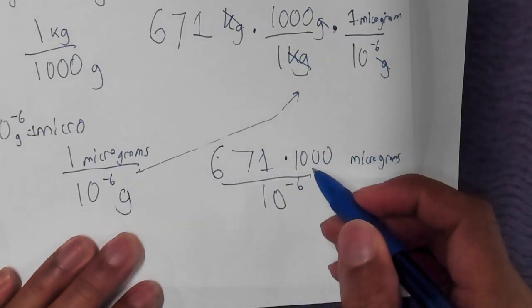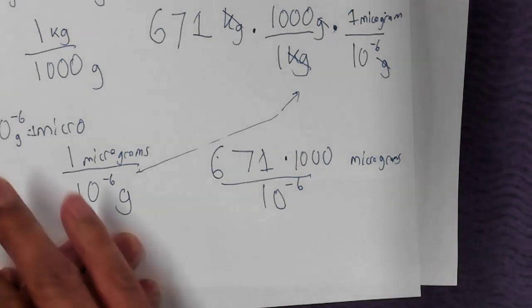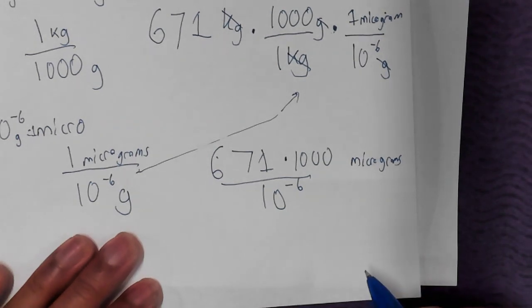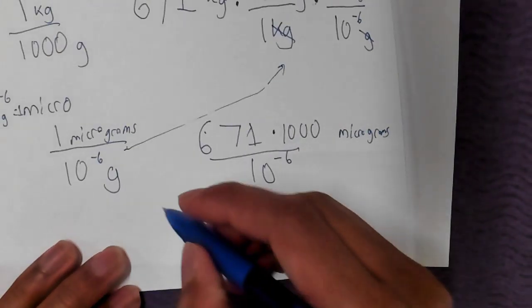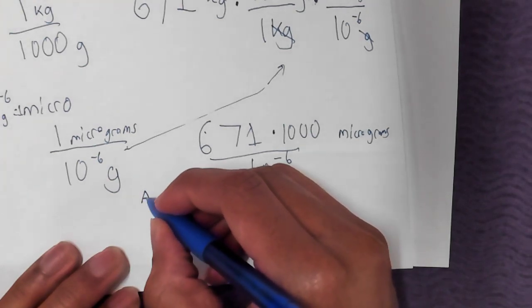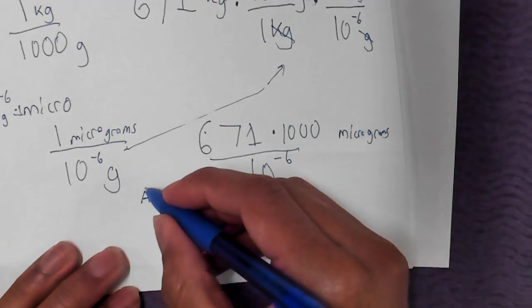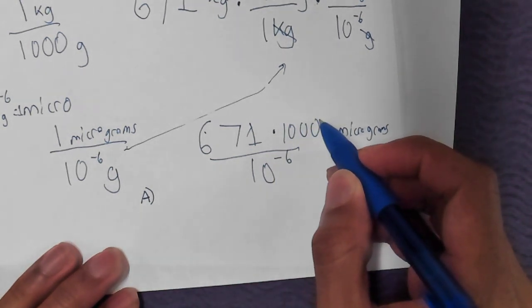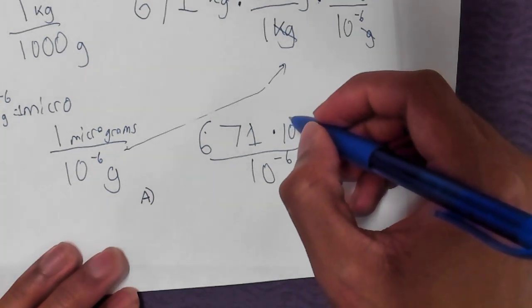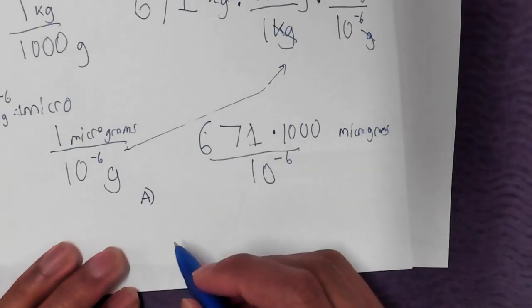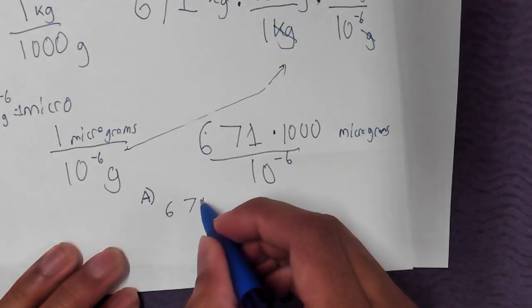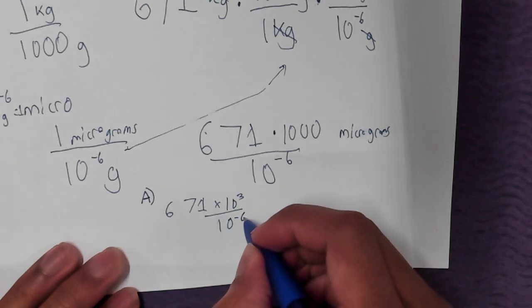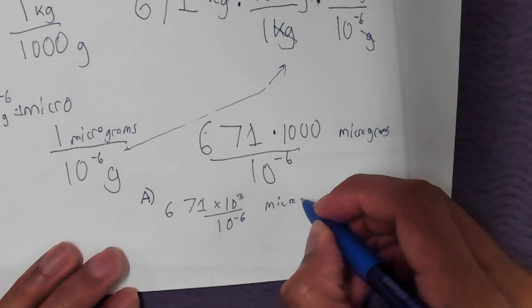Now the way it's written, I can cancel out grams up here so that we're left with micrograms. Kilograms cancel out and now grams cancel out. We're left with micrograms as we wanted. So we have 671 times 1,000 times 1 unit micrograms over 10 to the negative 6.